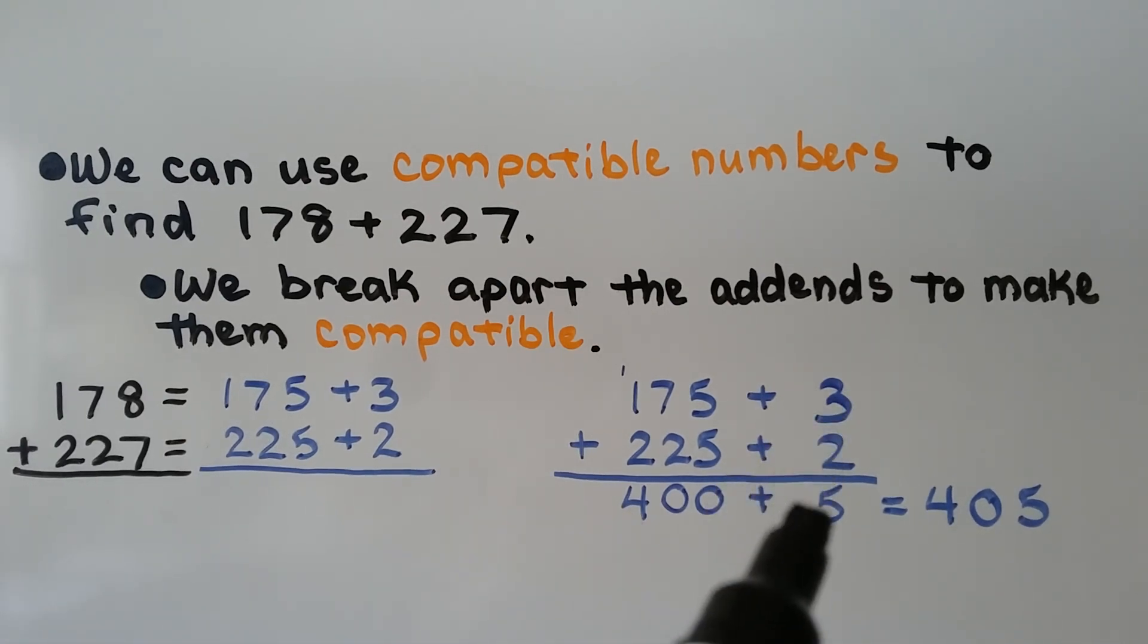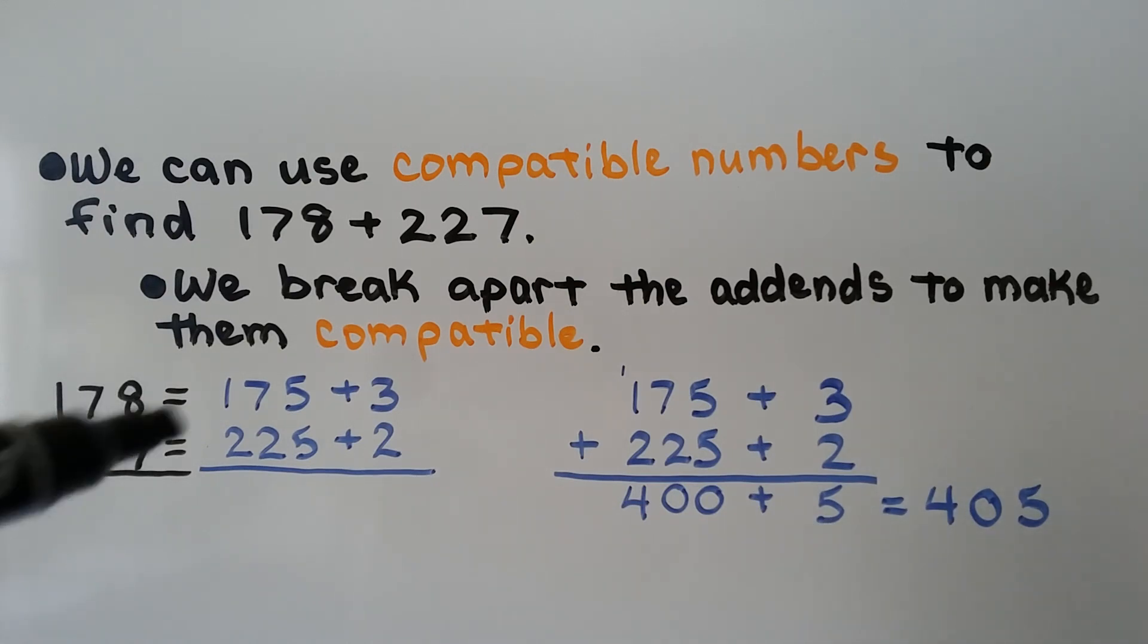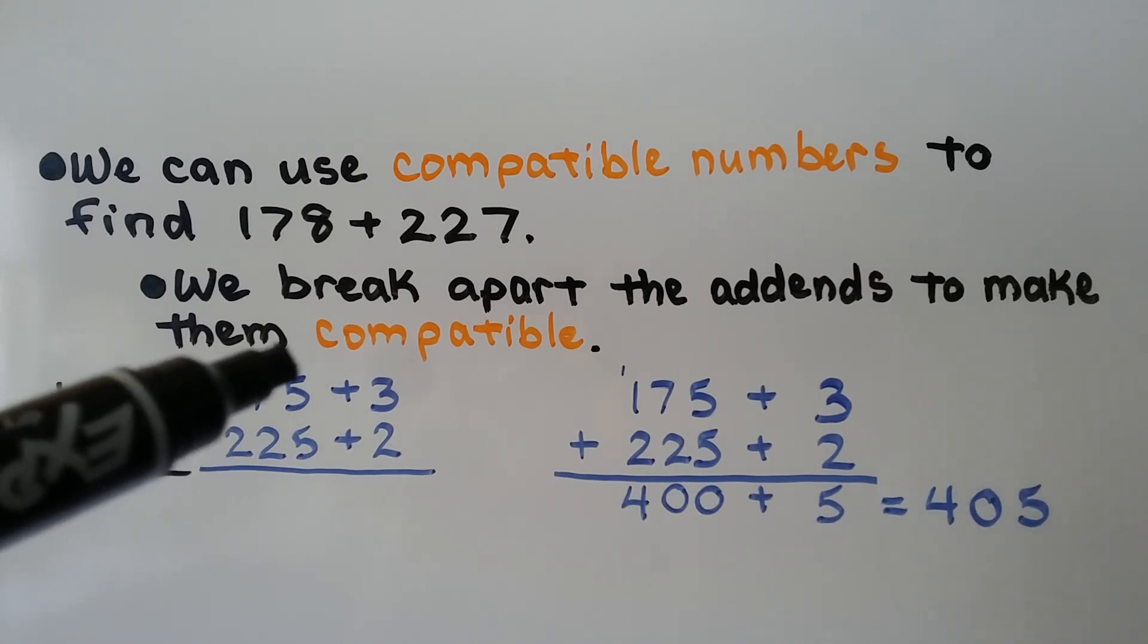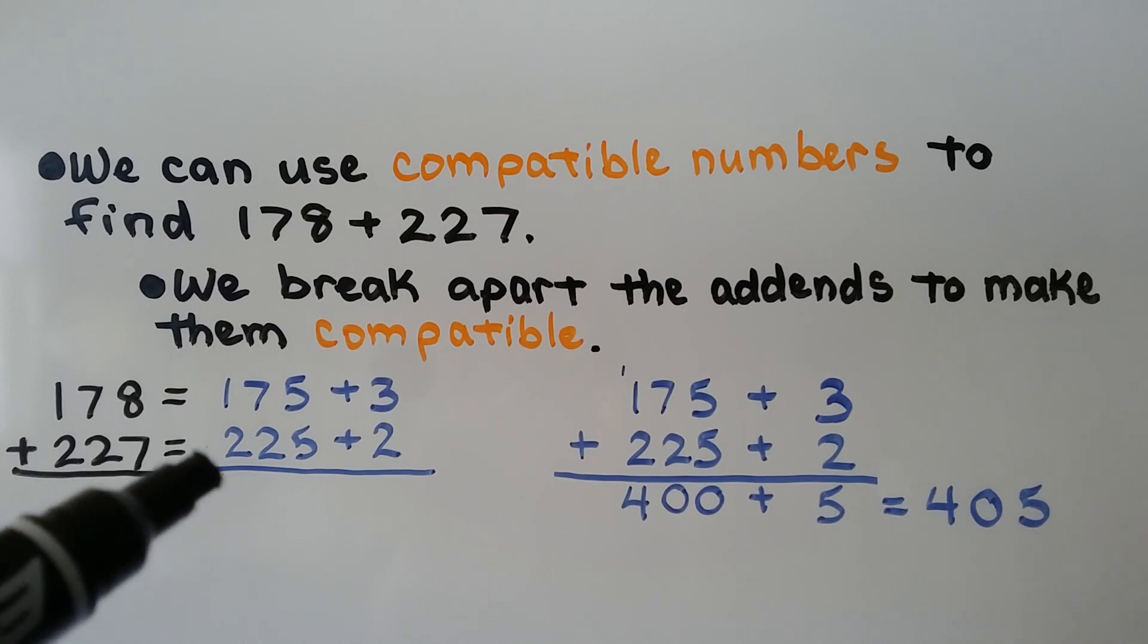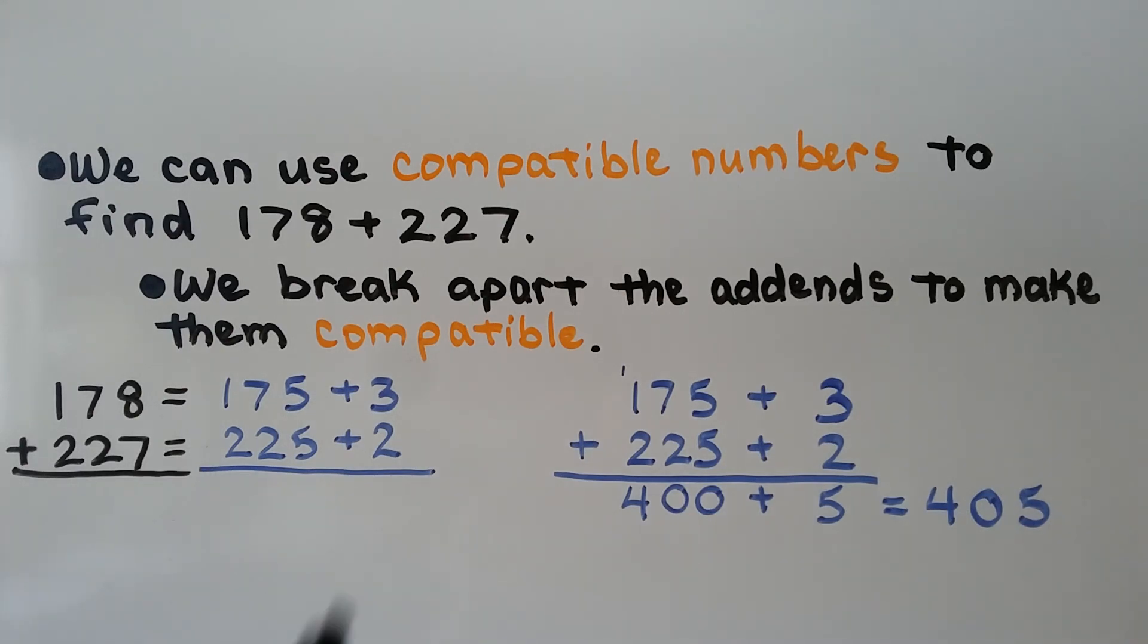Then we add the 3 and the 2 to make a 5, and we get 405. So we can add 100 and 200 to get 300, and then the 75 and 25 to get another 100. That would give us 400. Then we just add the ones. We have 405.